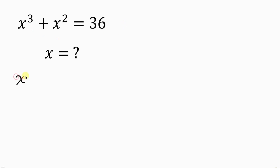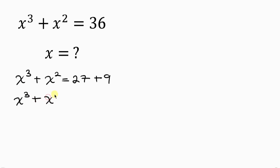So we have x³ plus x² equal to — splitting 36 into the sum of a perfect cube and a perfect square — we have 27, which is a perfect cube, plus 9, which is a perfect square. So this simplifies to x³ plus x² equal to 27 plus 9, where 27 is written as 3³ and 9 is written as 3².